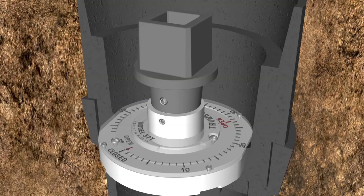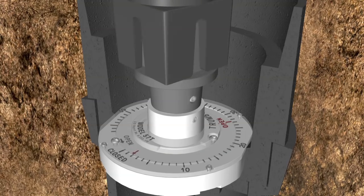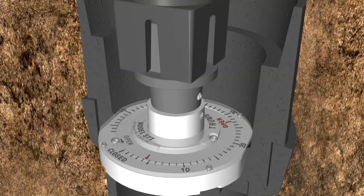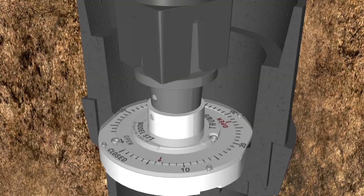To calibrate the position indicator, first, fully open the valve. Note the red indicator arrow now points to the number of turns required to open this valve.